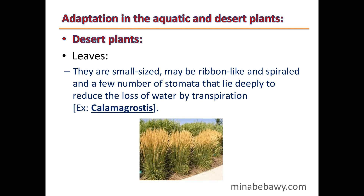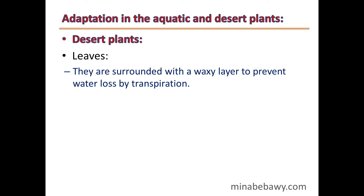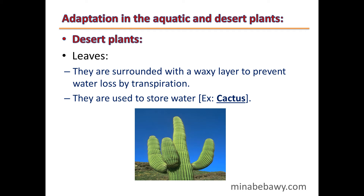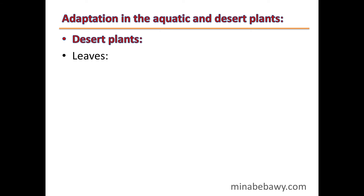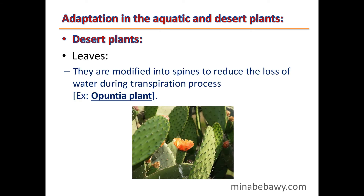The leaves of desert plants are small-sized, may be ribbon-like and spiraled, with few stomata that lie deeply to reduce water loss by transpiration, such as in Calamagrostis. They may be surrounded with a waxy layer to prevent water loss, such as in cactus, or modified into spines to reduce transpiration, such as in the Opuntia plant.